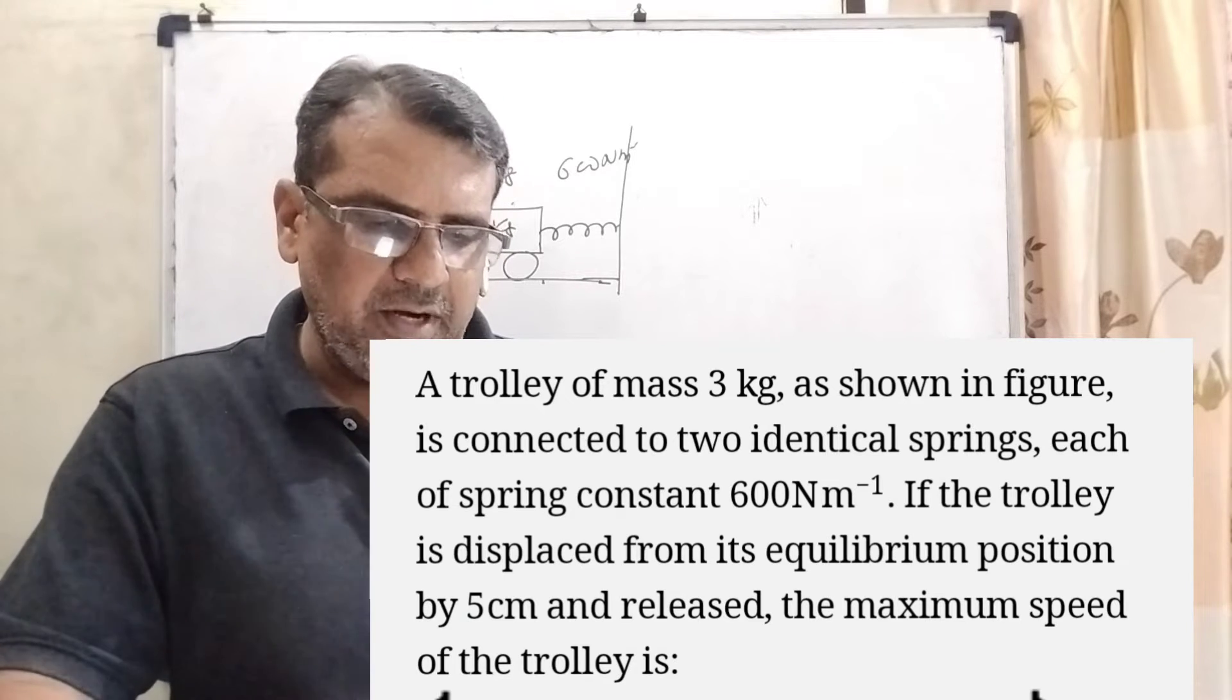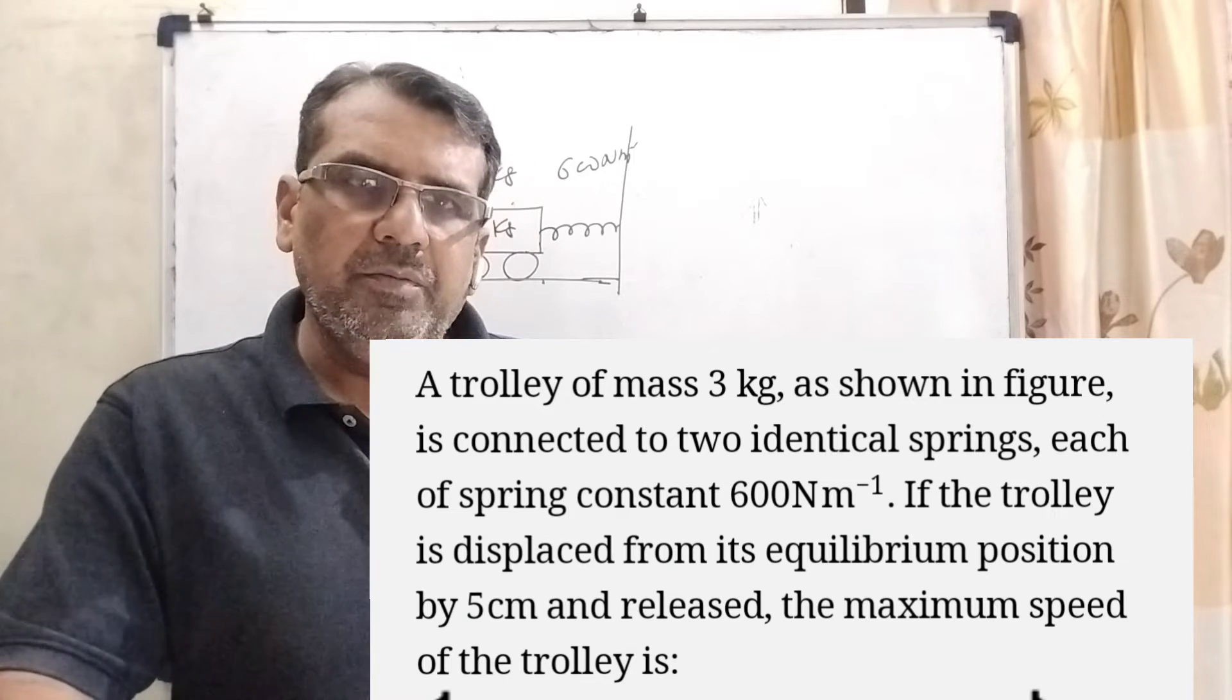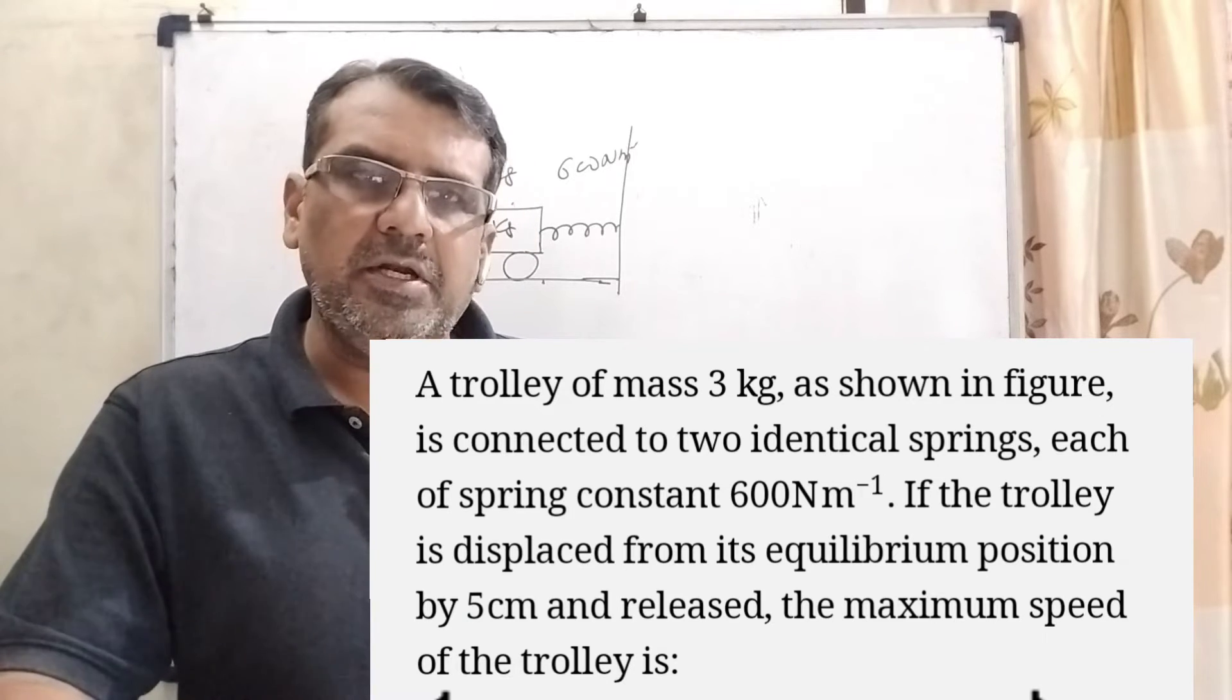Here we have given four options. Option A, 0.5 meter per second. Option B, 1 meter per second. Option C, 2 meter per second. And option D, 3 meter per second.